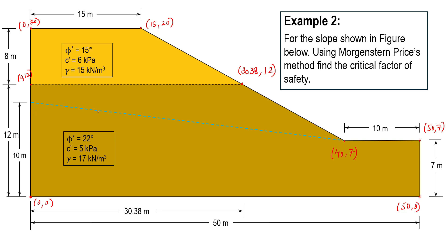Since this problem has pore water pressure conditions, we can see the groundwater table line given in the problem. To define the pore water pressure conditions, we also need the coordinates of those points. The starting point of the piezometric surface is at 0,10, and the ending point is already defined at 40,7.